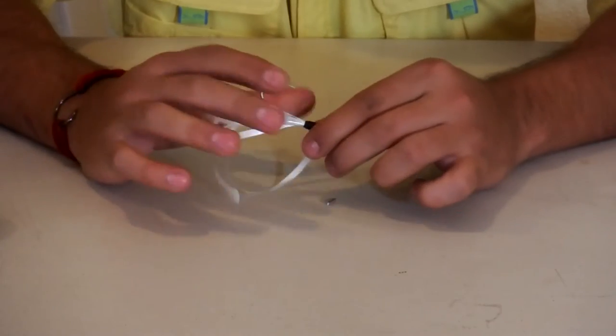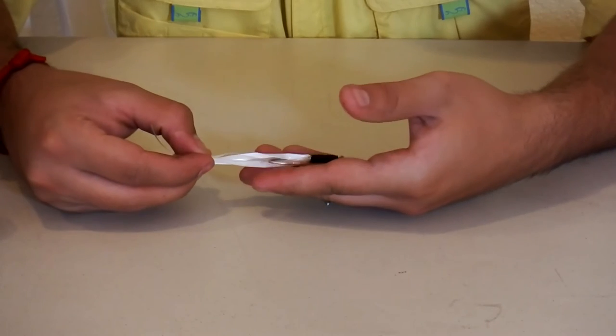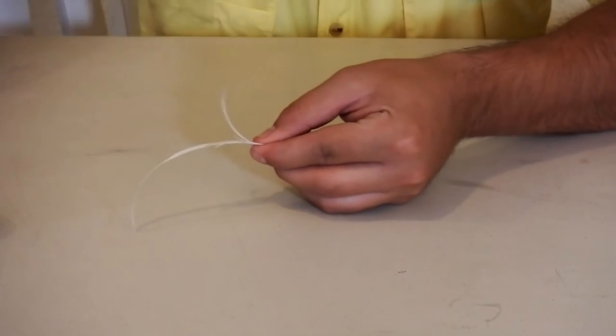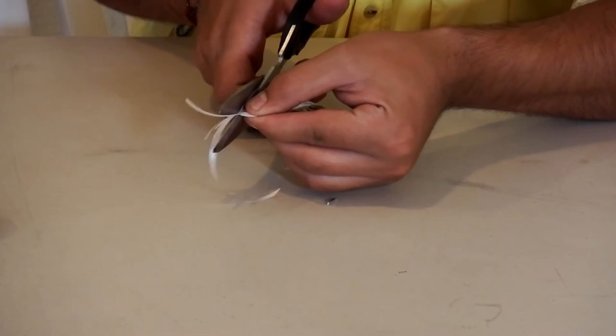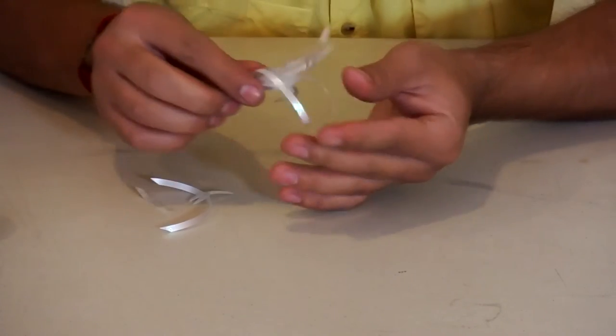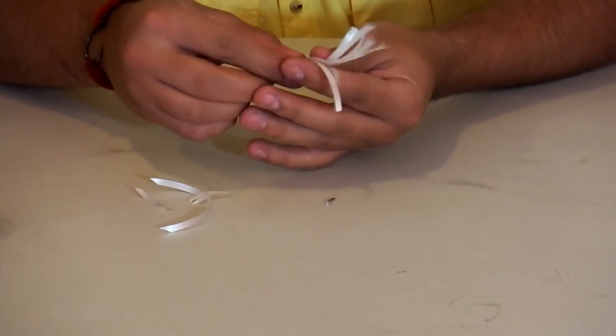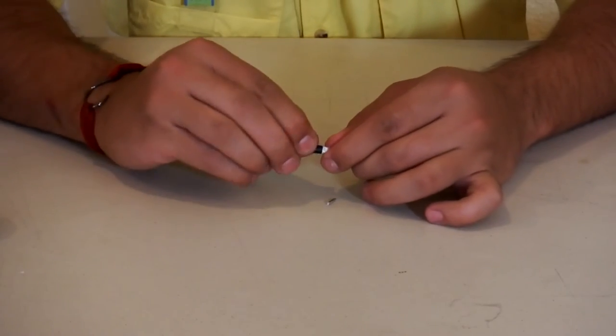So now that we have it like this, we're going to measure about three inches or so. Cut all our hairs off at an angle just to give it a nice little finished touch. Move those off to the side. Now we're ready to put the eyes on.